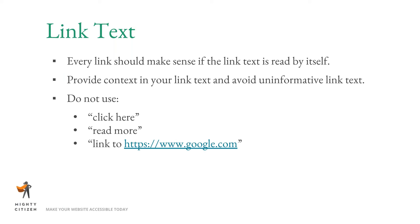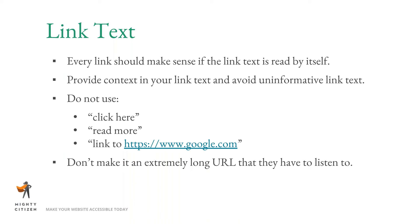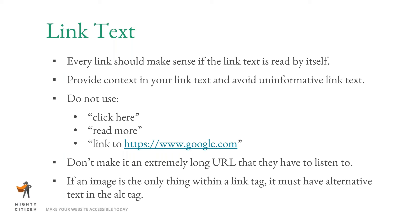If you're a visual user, you can see that "click here" refers to adjacent content, but a keyboard or screen reader user jumping from link to link won't have that context. If you need to link to another website, you can say something like "google.com," but don't make it an extremely long URL. Use descriptive links. Also, if an image is the only thing within a link tag, it must have alternative text or it is essentially invisible.